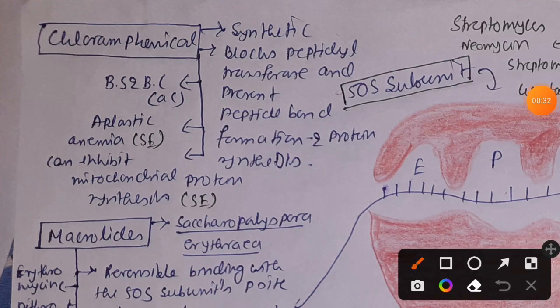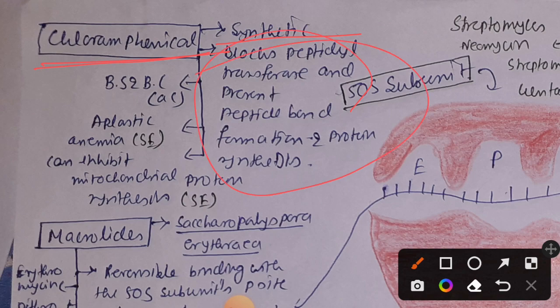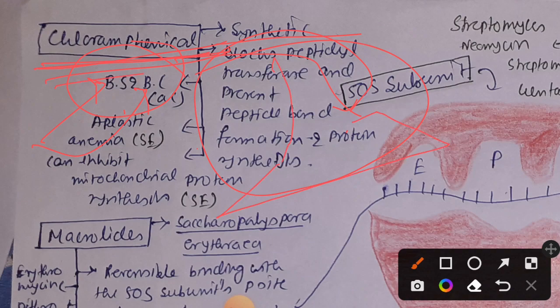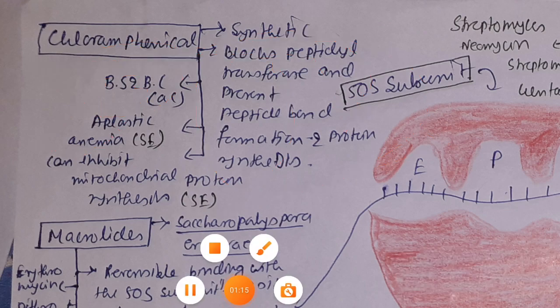The first 50S subunit inhibitor is chloramphenicol. It is a synthetic drug that blocks peptidyl transferase and inhibits peptide bond formation, thereby inhibiting protein synthesis. It is bacteriostatic, but may become bactericidal when used against organisms for which it acts very effectively, or when used at high concentrations.